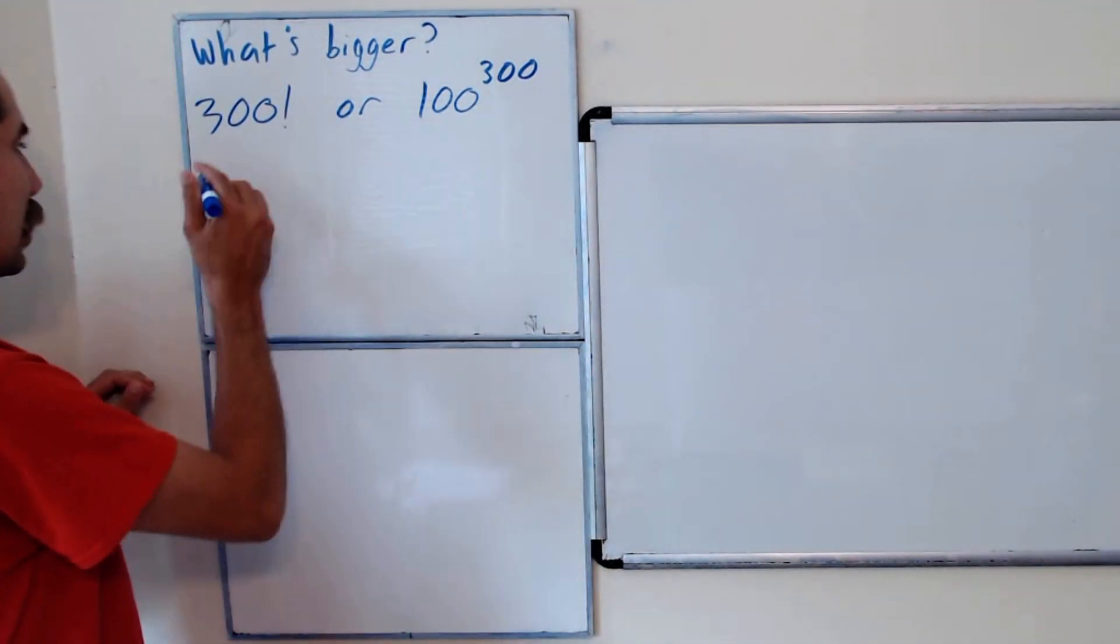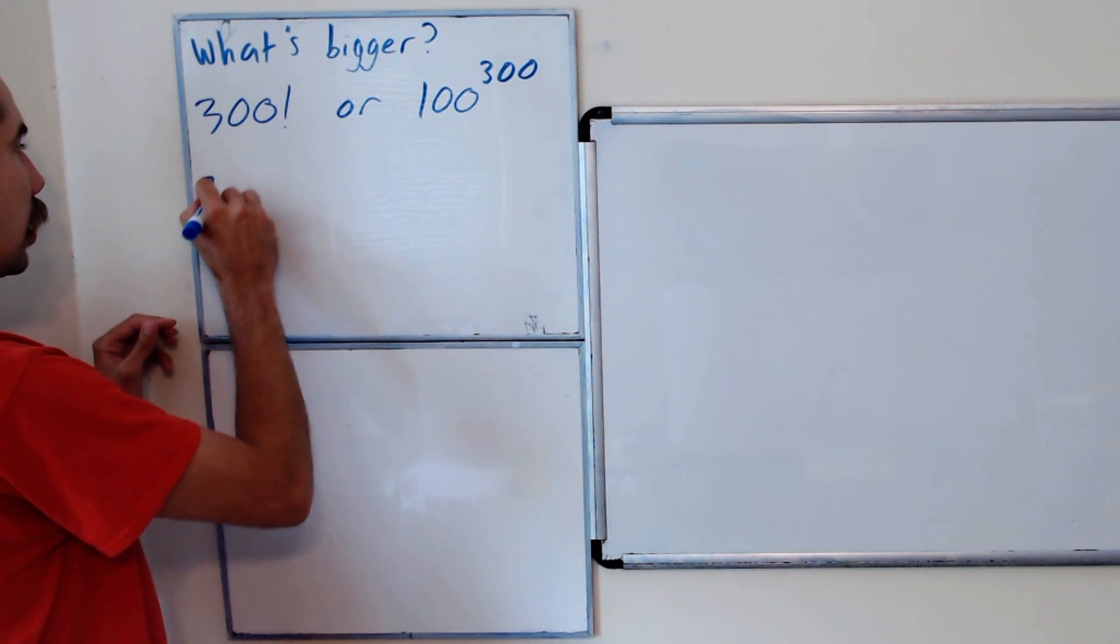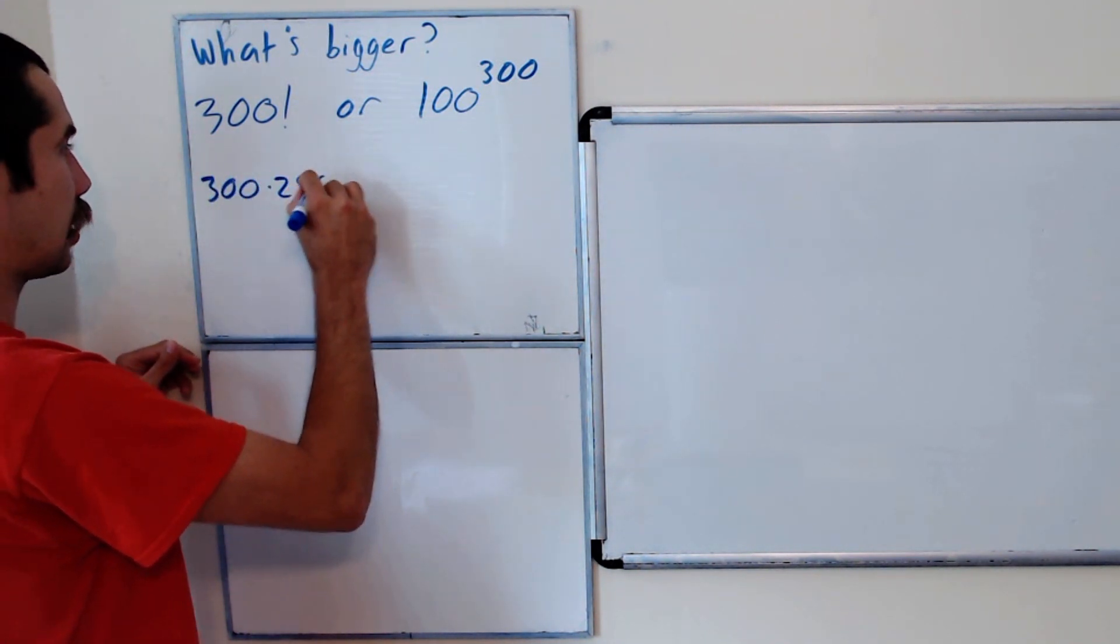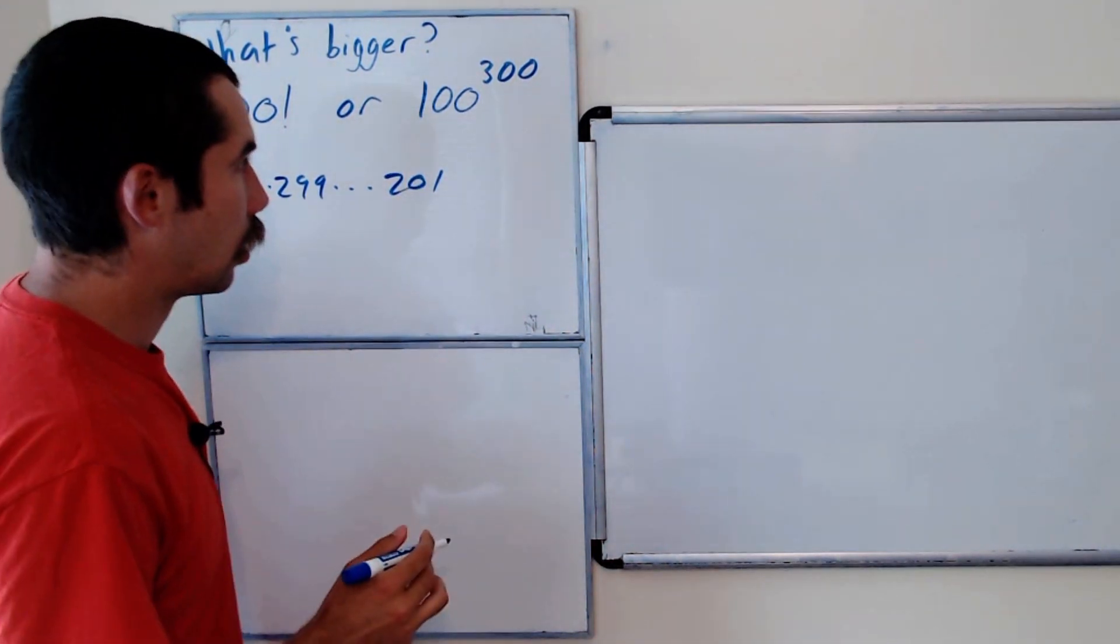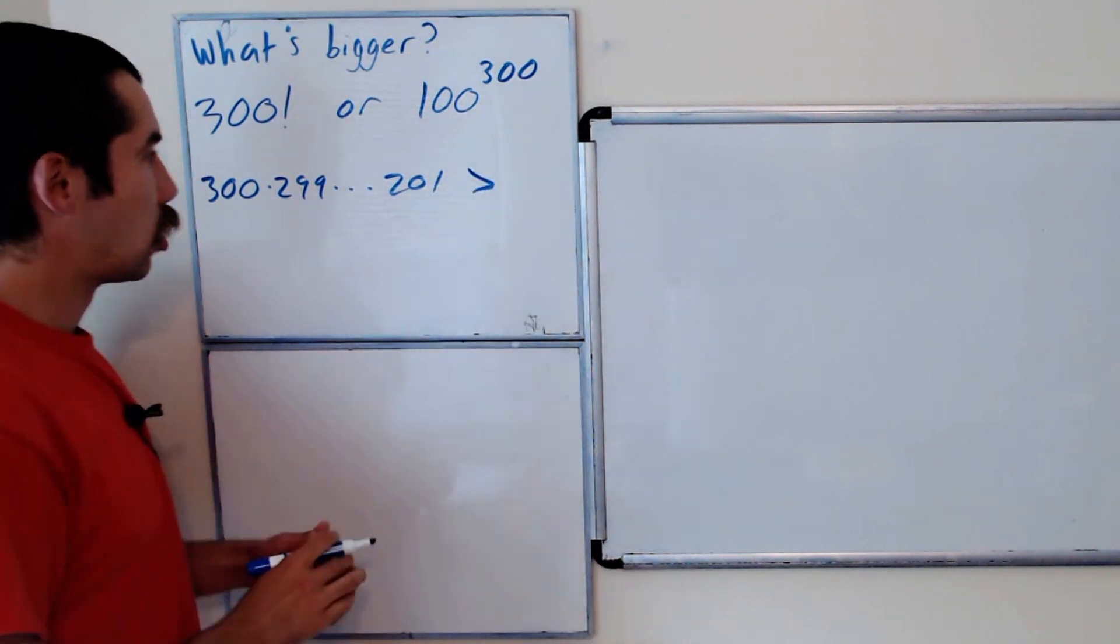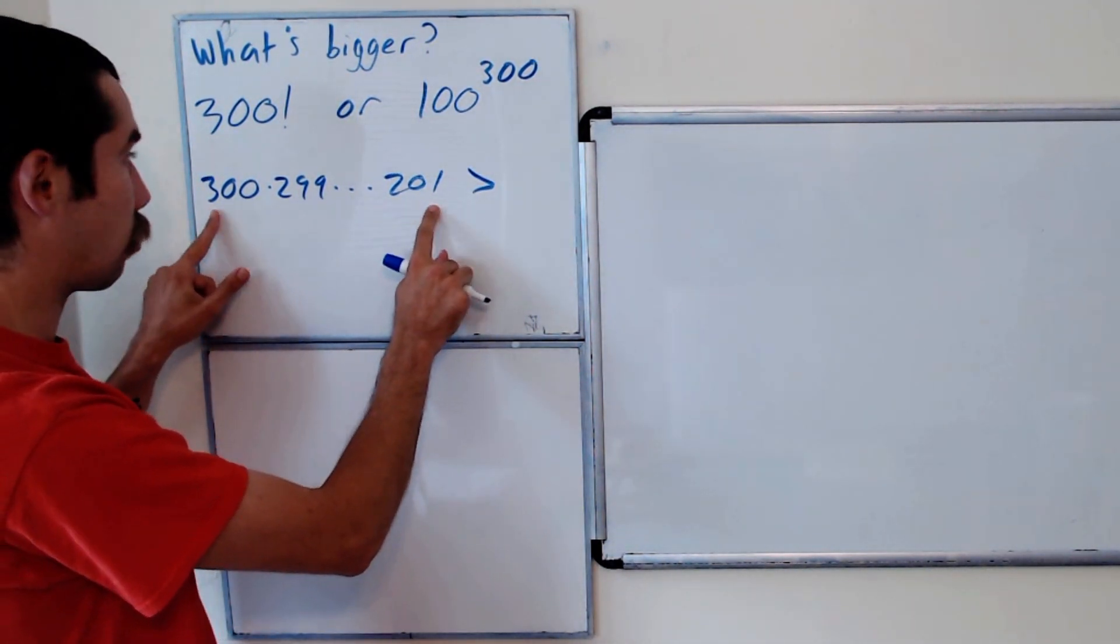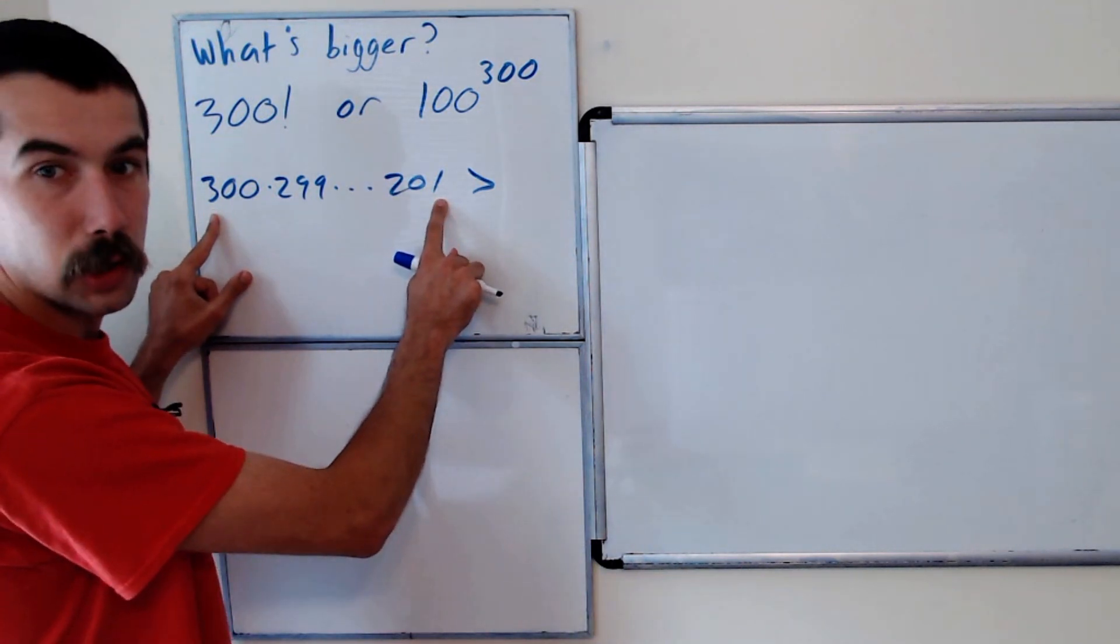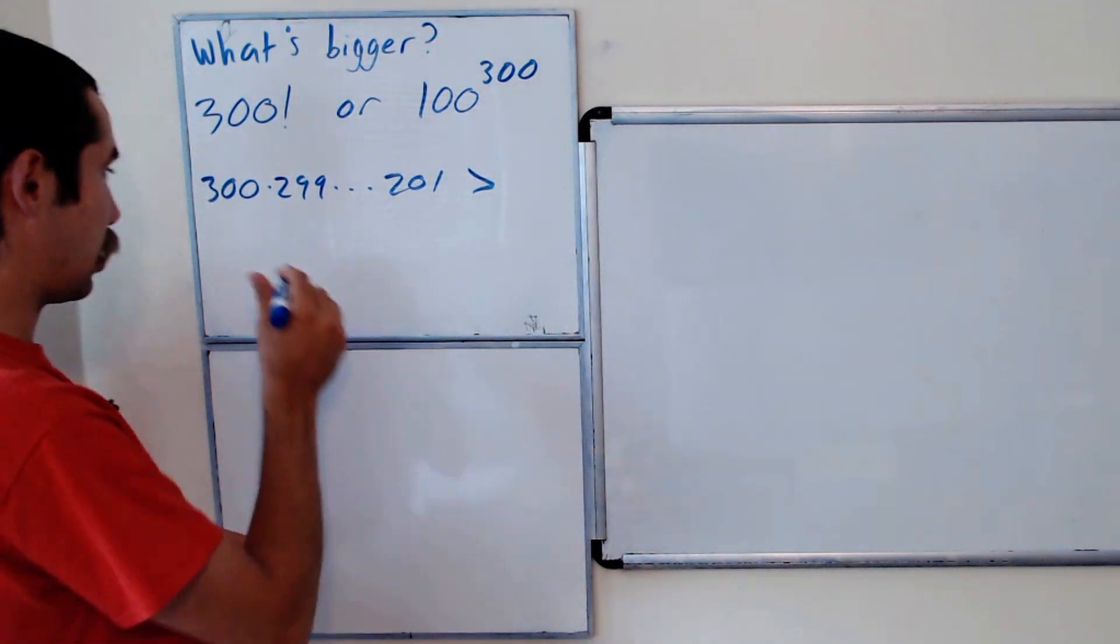Okay, well, let's take 300 factorial and we're going to break it up into parts. So the first part is going to be 300 times 299 all the way down to 201. And this product is greater than, well, we're going to go pairwise starting on the outsides. So 300 times 201 is approximately 60,000.